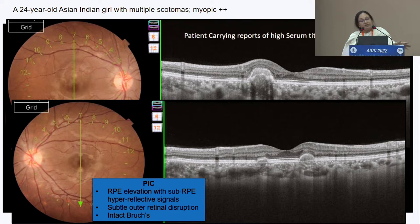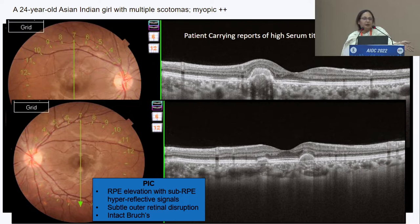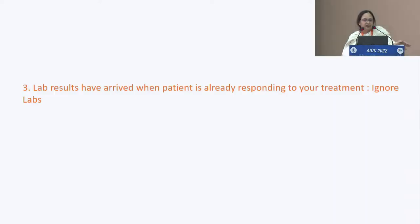The patient is carrying a report of high titers of CMV IgG — just ignore it because they don't have any relevance in this scenario. Your diagnosis is PIC; why should some external lab make you change your diagnosis or start antiviral therapy?